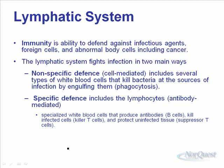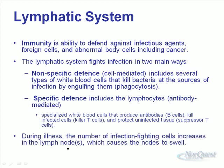There are B cells that produce antibodies and T cells that actually go out and attack cells. There are also suppressor T cells that kill off the B cells and T cells when they're done. The T cells and B cells are specific — there's a specific type of B cell for each infection we get, so for each type of bacteria we're infected with, only one group of B cells gets involved in the immune response. During a time of illness, the number of infection-fighting cells increases, and that's what causes the nodes to swell.